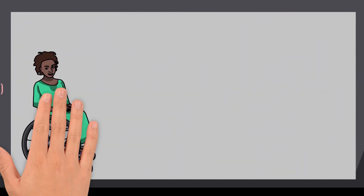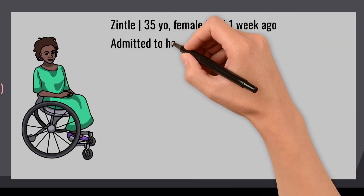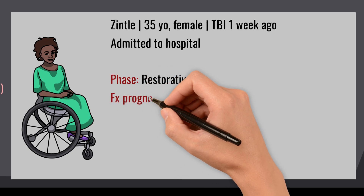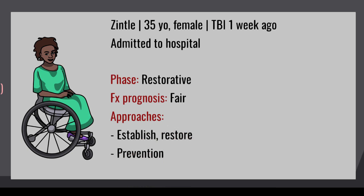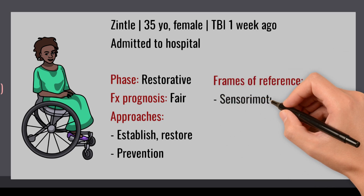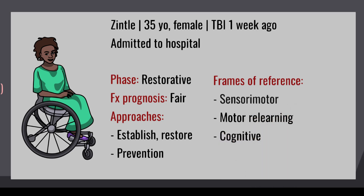The second case is Zinclair, a 35-year-old female who had a traumatic brain injury one week ago and is currently admitted to hospital. She is in the restorative phase because the injury was recent and she is medically stable and ready for therapy. Her fair prognosis may reflect good indicators such as her age — due to neuroplasticity — but poor factors such as access to healthcare and motivation. The primary approaches would be establish-restore to improve physical and cognitive client factors, and tertiary prevention to prevent complications such as contractures and hypertonicity. Appropriate frames of reference include the physical neuro-based ones — sensory motor, motor relearning or Kahn-Shepard — and a cognitive frame of reference if she has cognitive fallout.